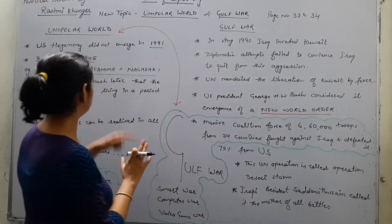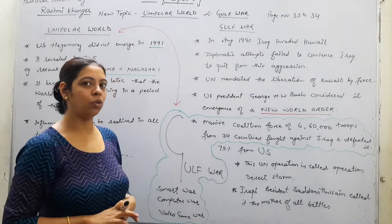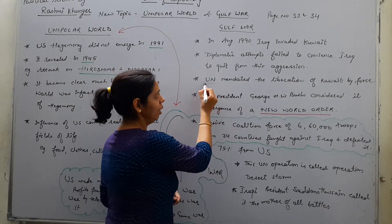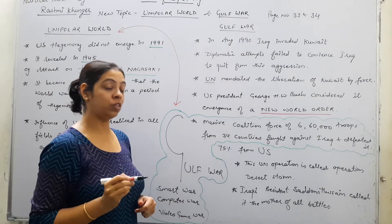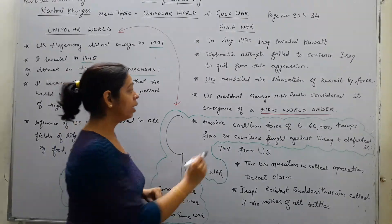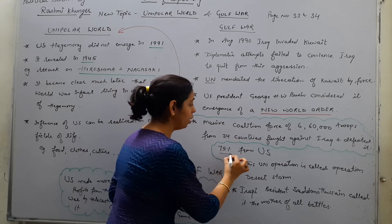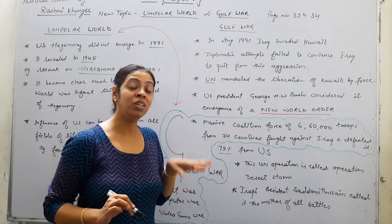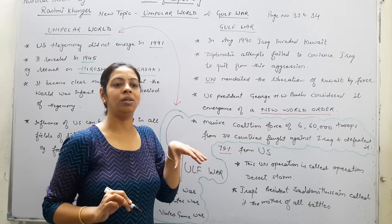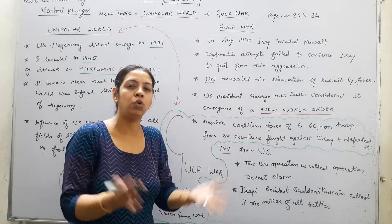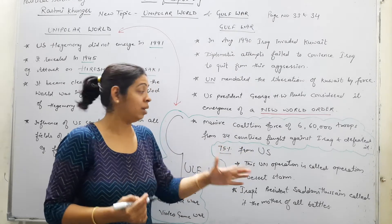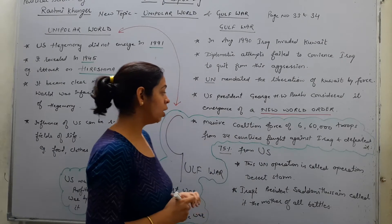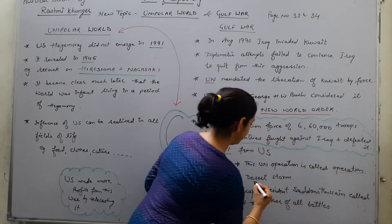Now connecting these two topics: US hegemony and the new world order. Although it happened under the name of the UN, the main decision was taken under the influence of the US. Out of the coalition forces, 75% were from the US. In decision-making, it was actually the US that created the situation within the UN. So in the name of the UN, it happened because it was the US's wish. This UN operation is called Operation Desert Storm.